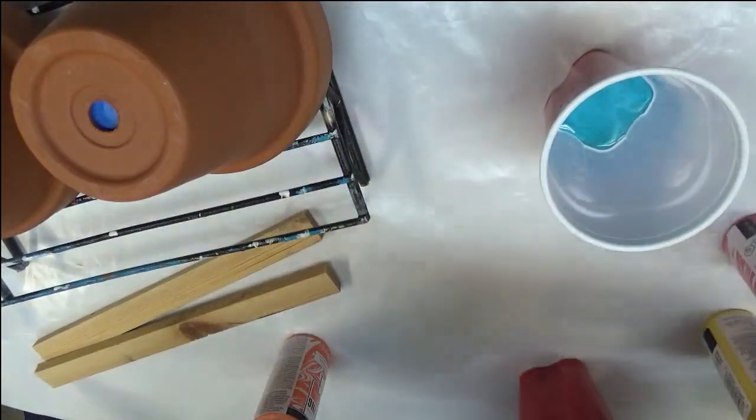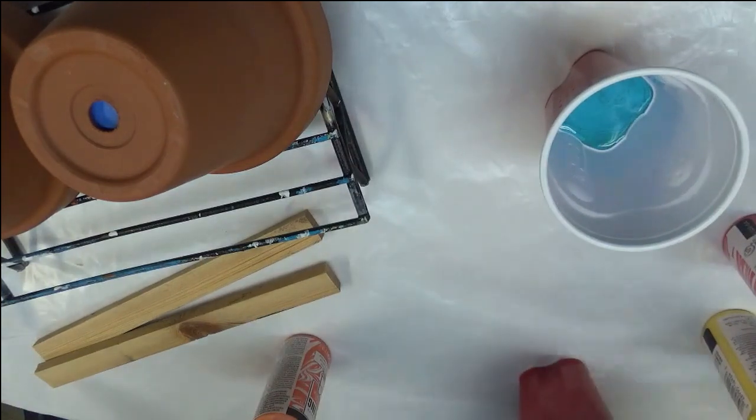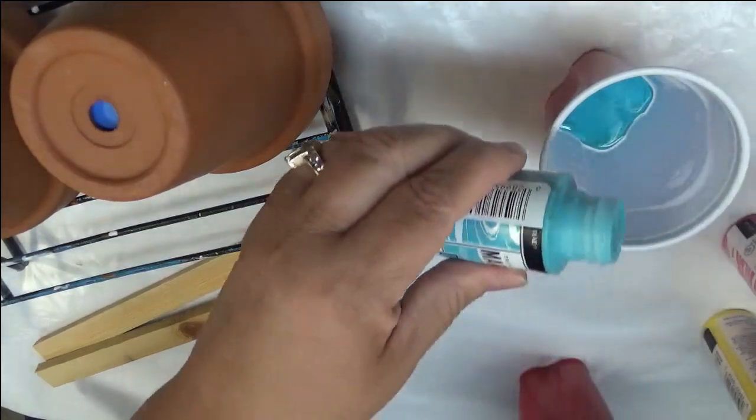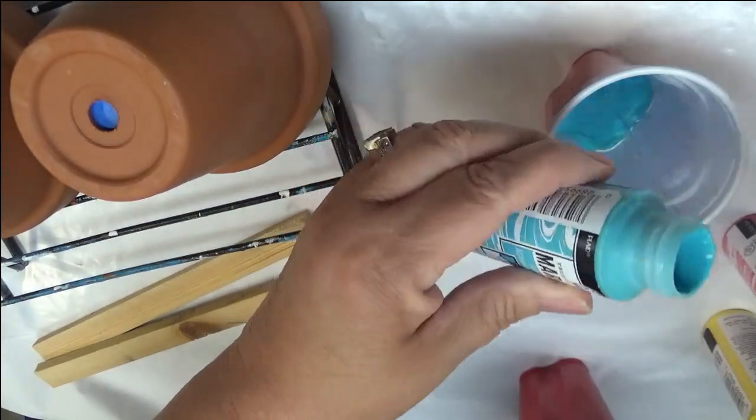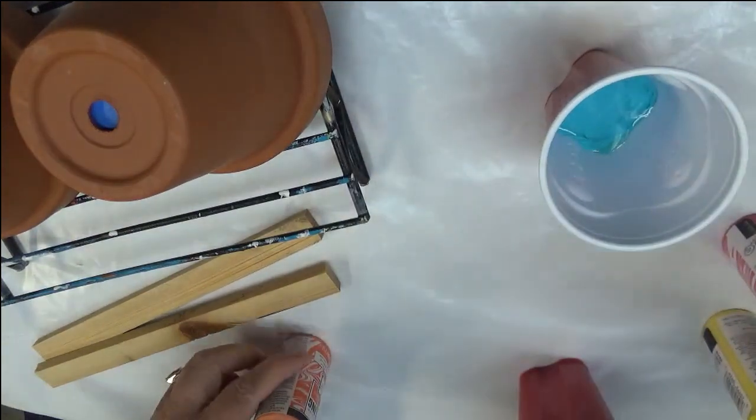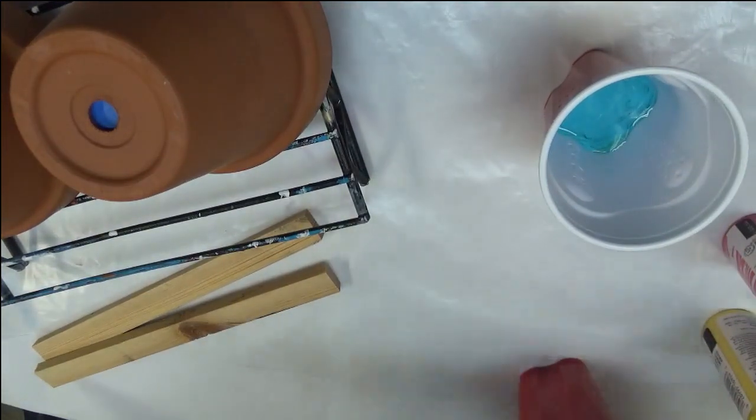I'm going to just layer them. It's kind of runny. Oh, you know what I forgot to do? You're supposed to shake these. I forgot to do that, so that might be why it's a little runny. Alright, so I'm going to just layer them and try to do a different set of colors for each pot just so they're different.